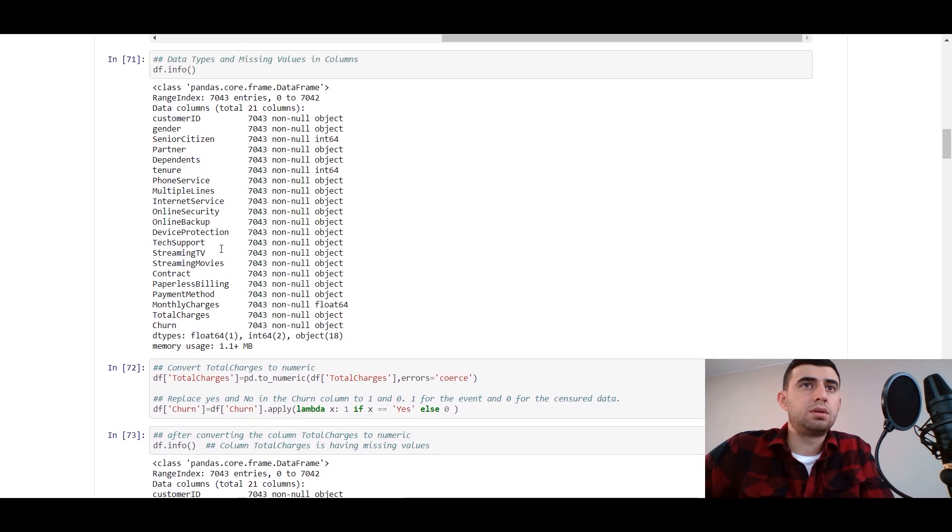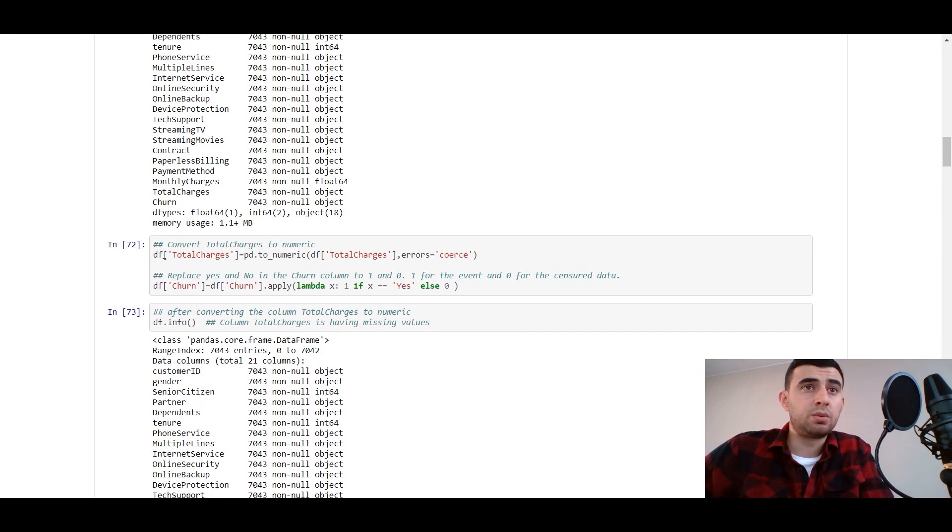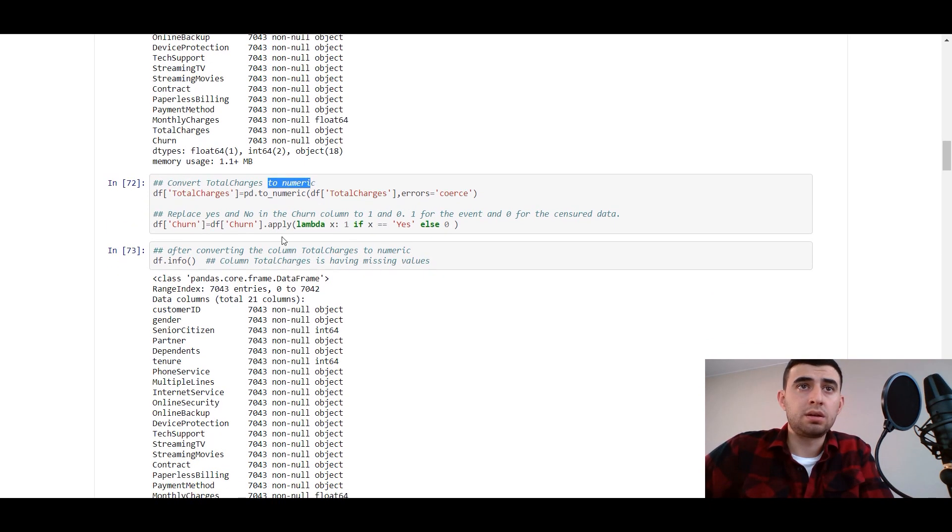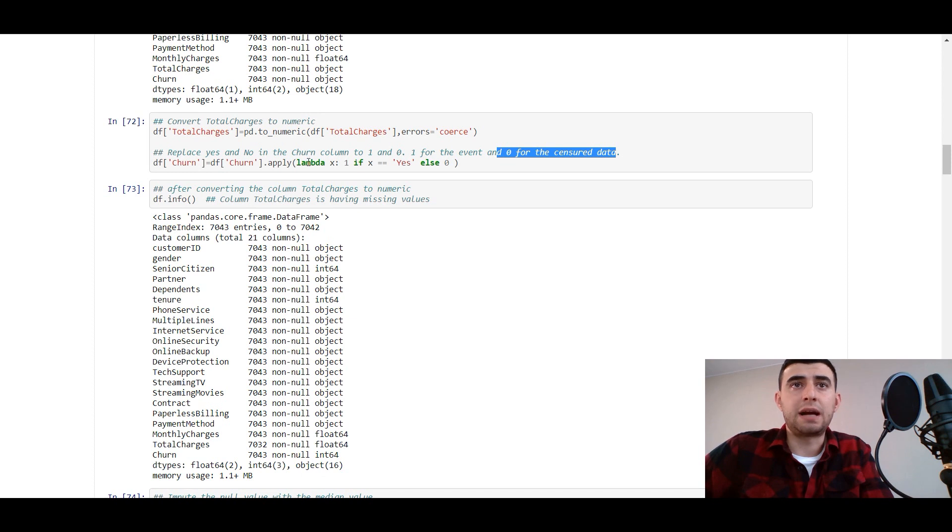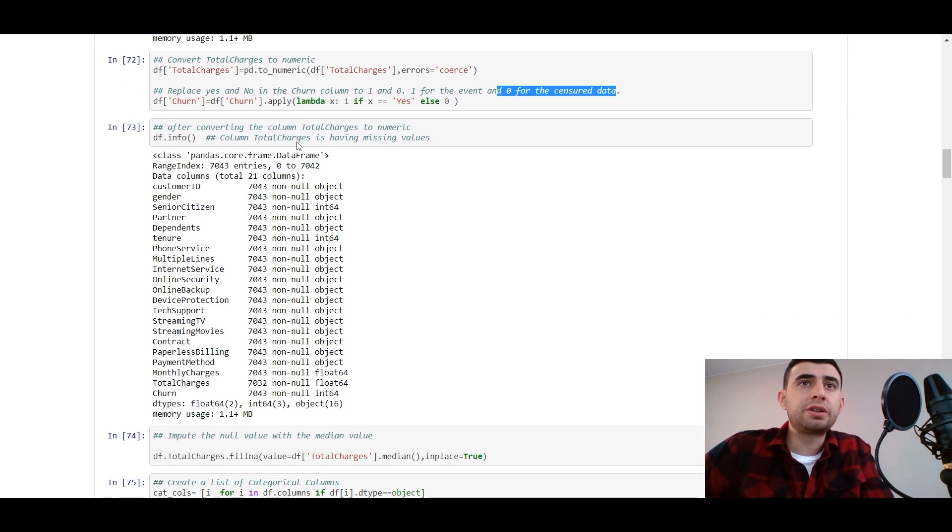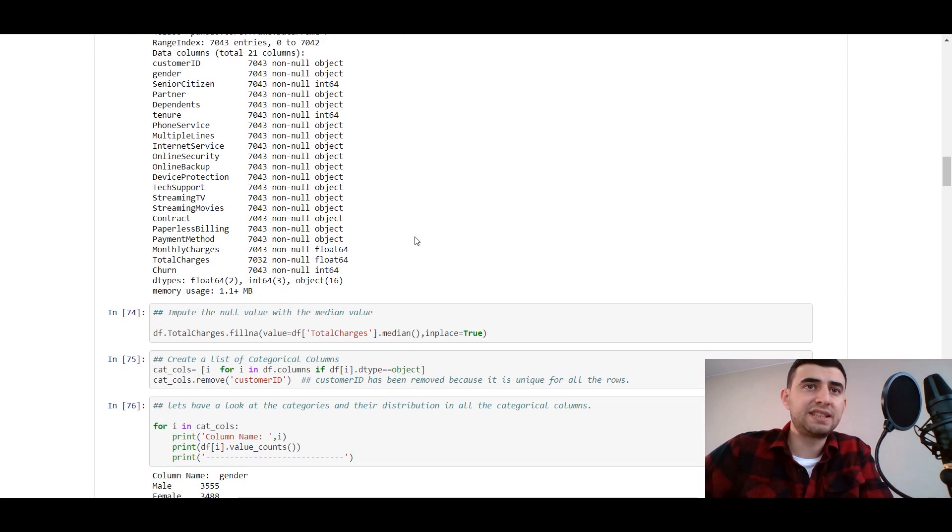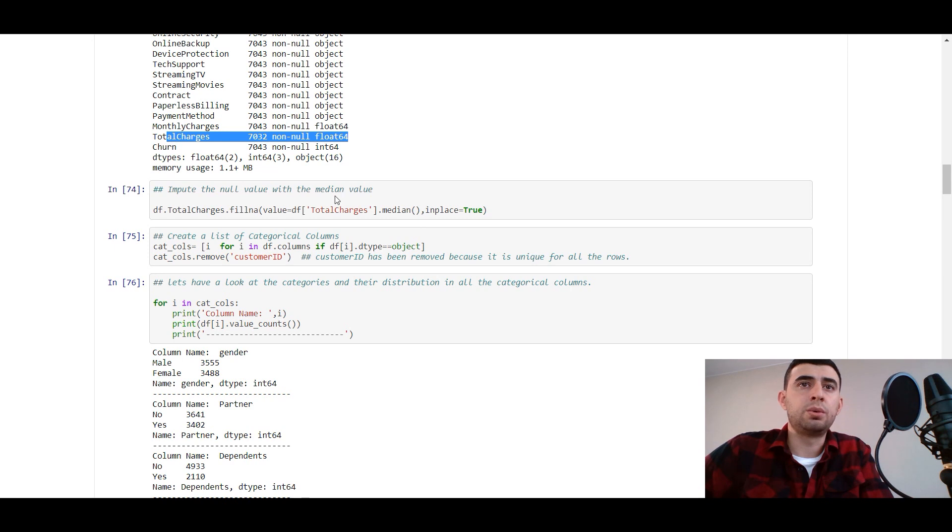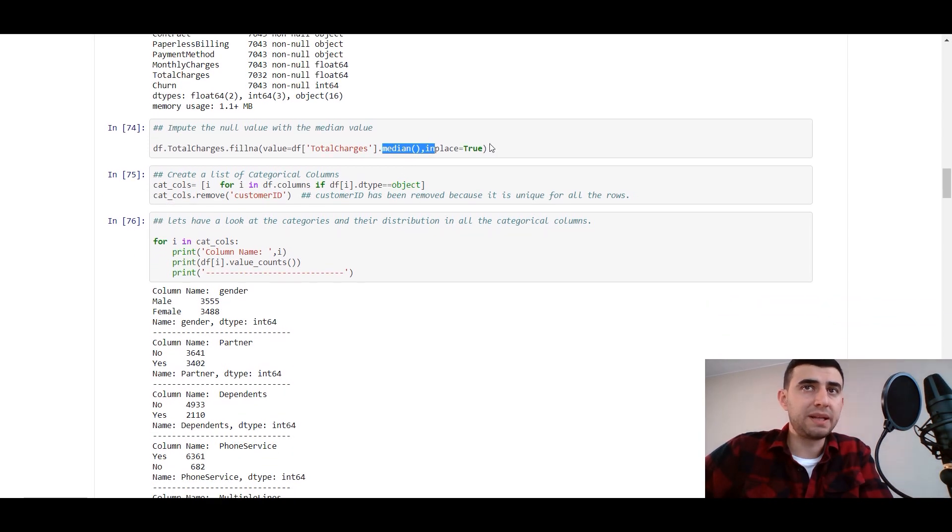Let's see the data types with df.info. We've got the data types: float, integer, object. Next step we take the total charges and convert it to numeric. Replace yes and no in the churn column to one and zero - one for the event and zero for censored data. We are doing it applying the lambda function.